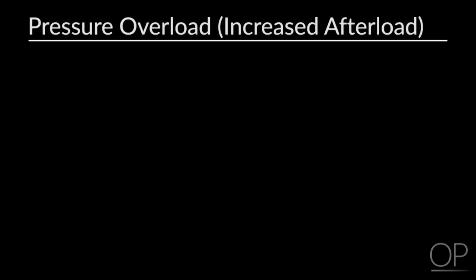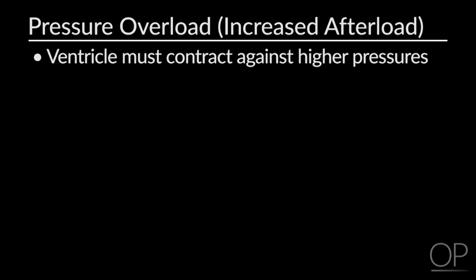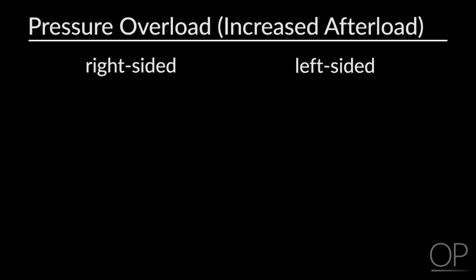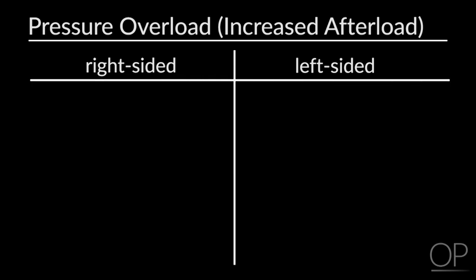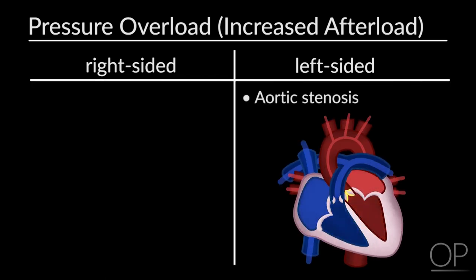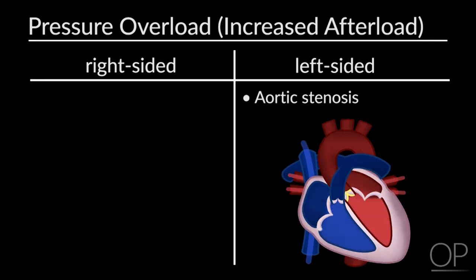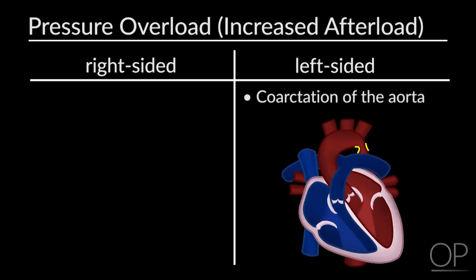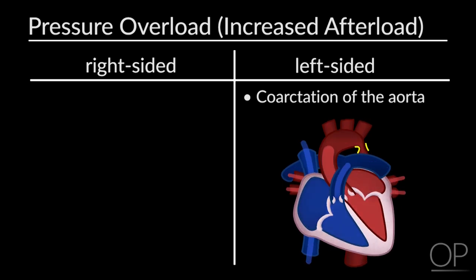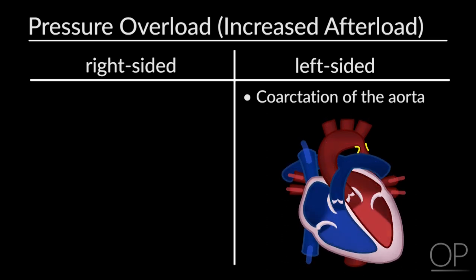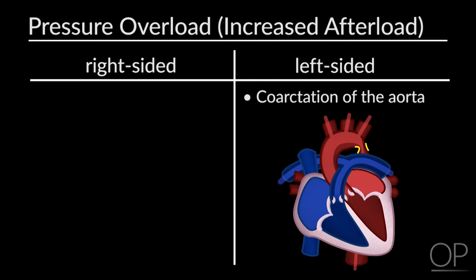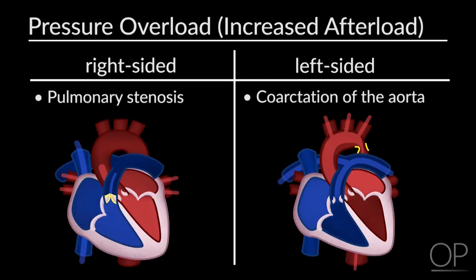The third cause of heart failure in infants and children is pressure overload, or increased afterload. In this circumstance, the ventricle must contract against higher afterload pressures or more distal pressures, and this can occur on both the left and the right side of the heart. Left-sided lesions include aortic stenosis or coarctation of the aorta, where there is a fixed obstruction against which the left side of the heart must contract. Right-sided lesions include pulmonary stenosis.